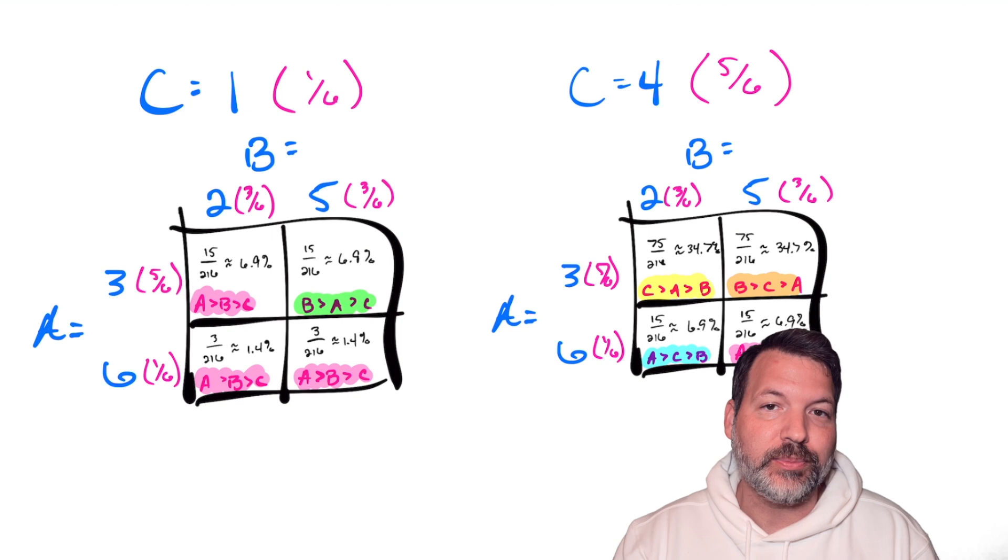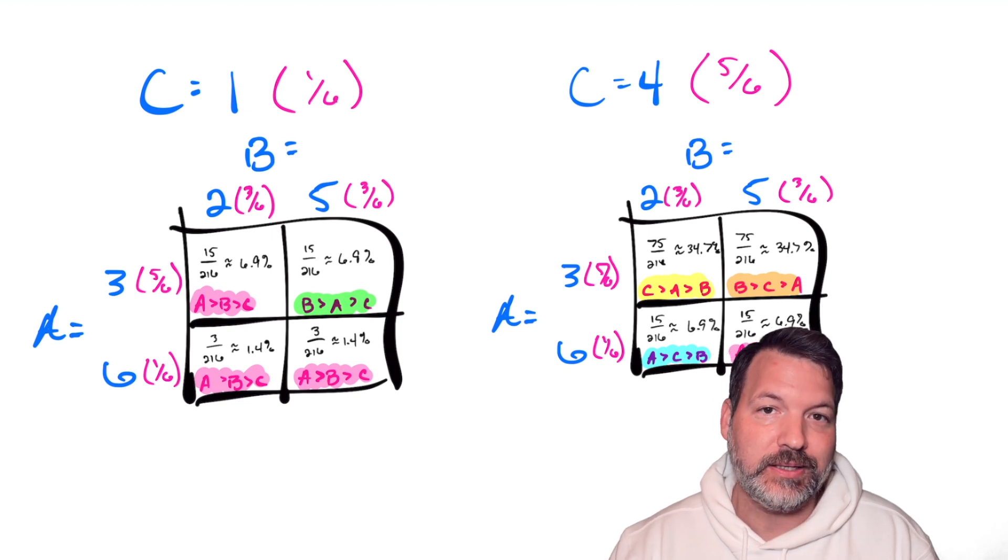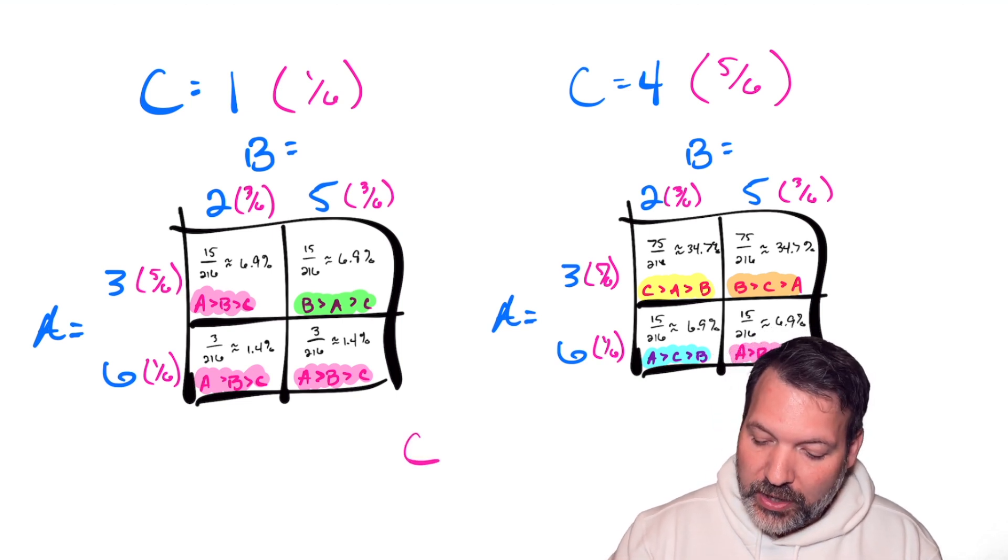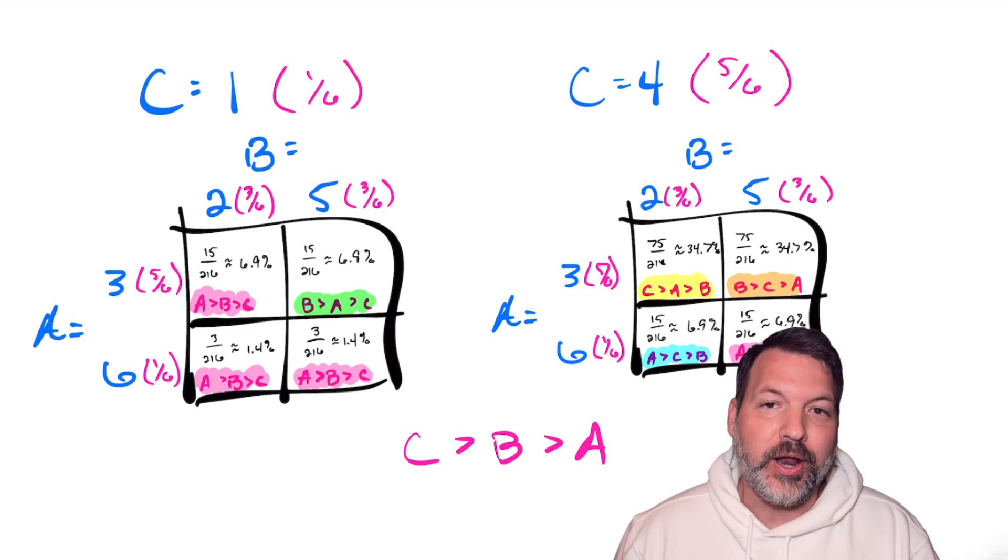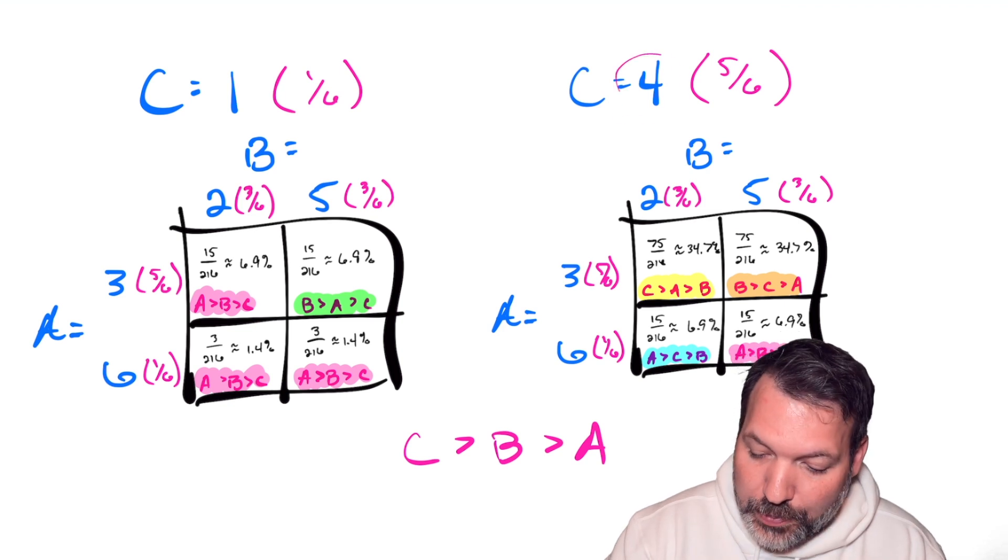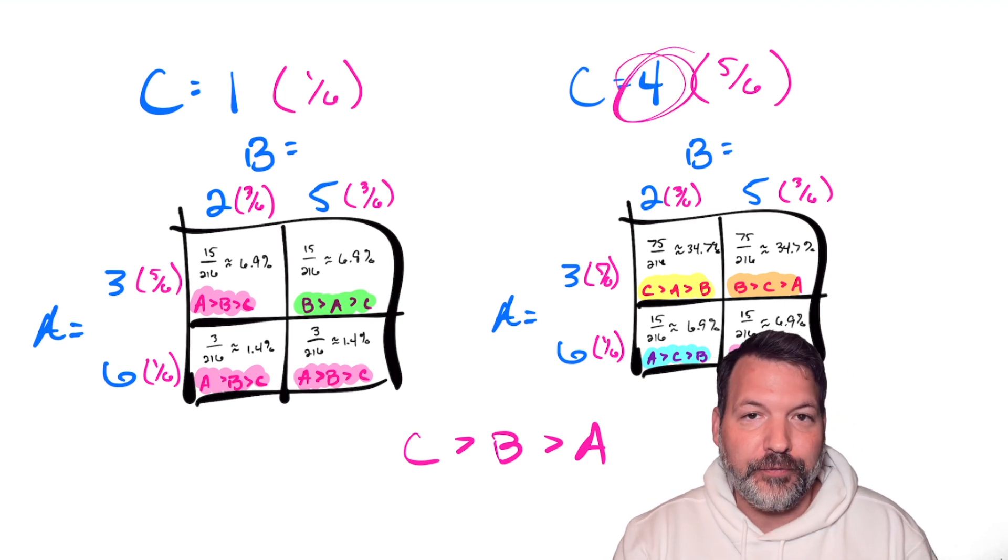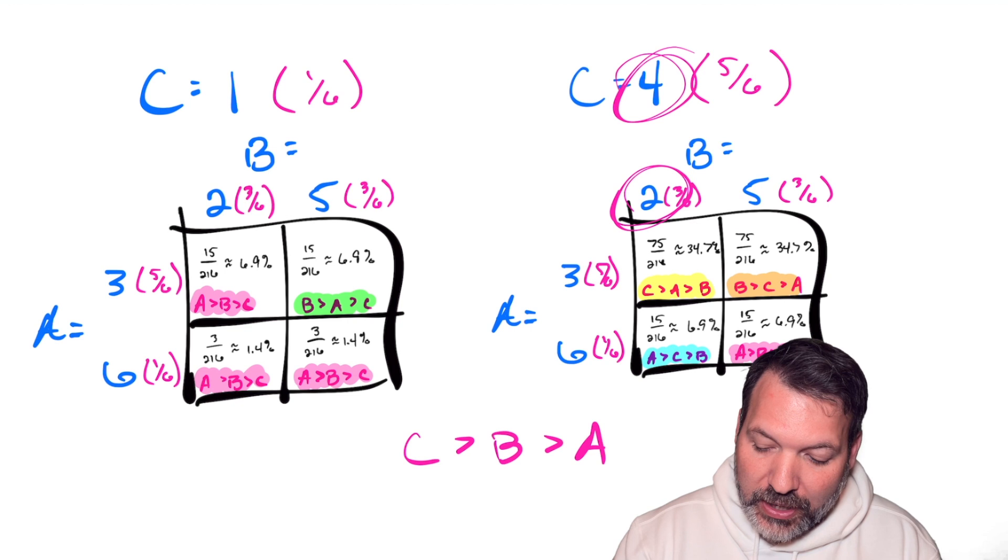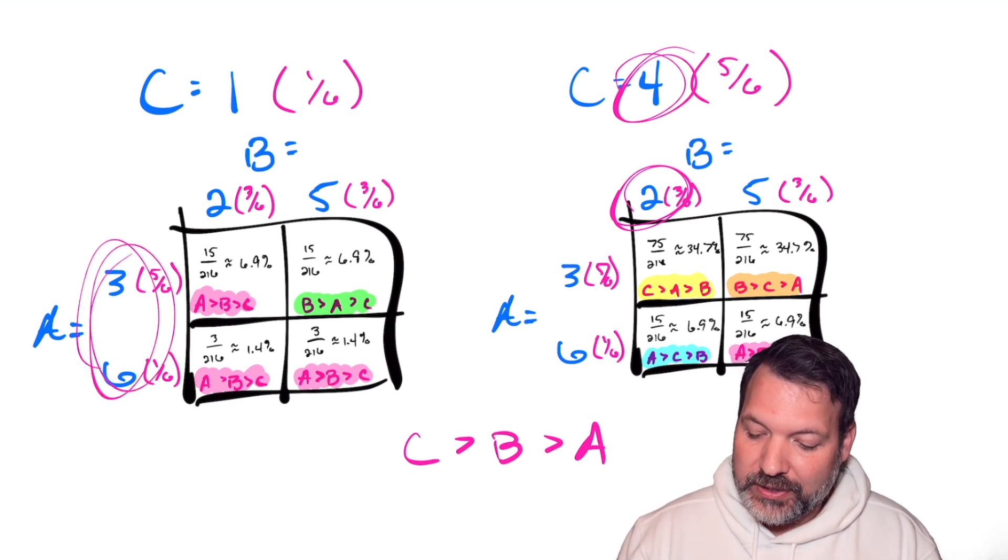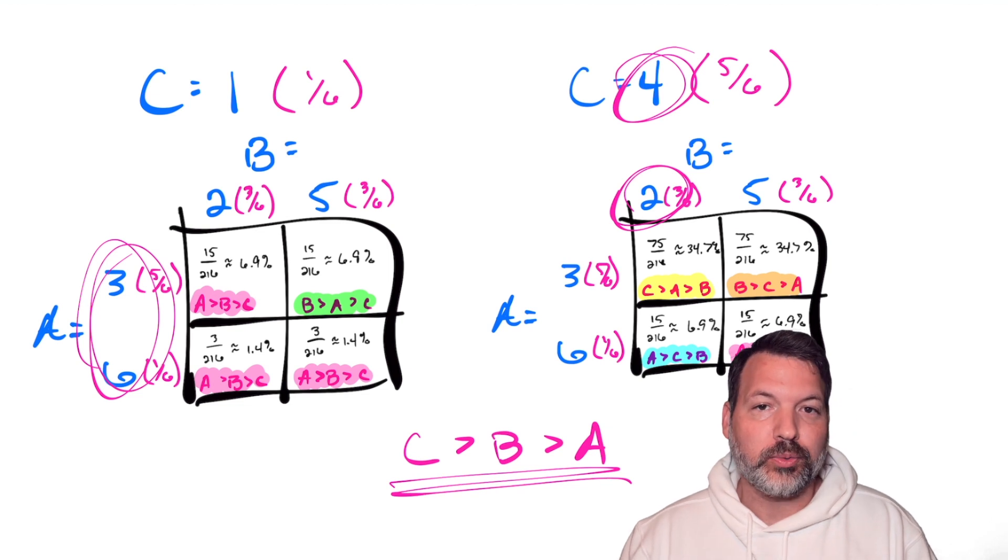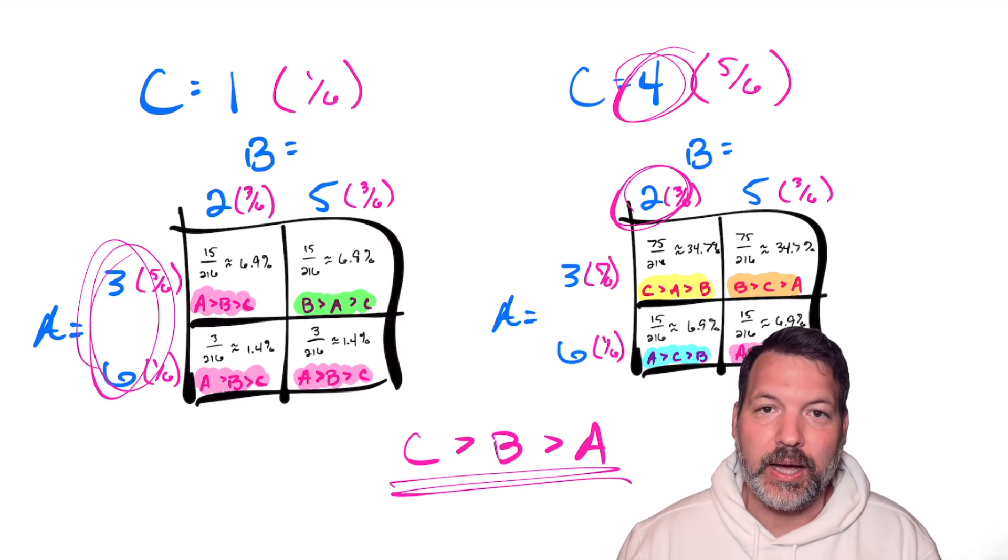You'll notice there's one possible arrangement of A, B, and C that never shows up. We never end up with the outcome C beating B beating A. Just based on how the numbers worked out here, if C is beating B, C has to be getting a 4, which means B has to be getting a 2, and A has no roll that's less than a 2, and so we do have a sixth possible arrangement that just occurs zero percent of the time.